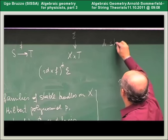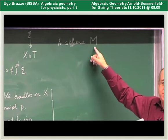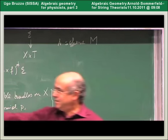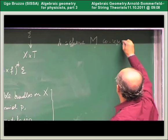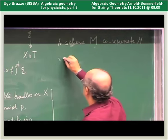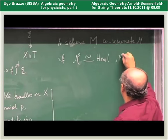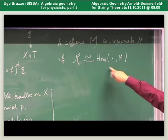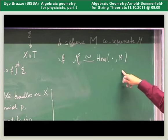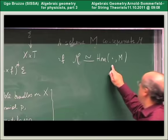We say that a scheme M coarsely represents the moduli functor if this functor is isomorphic to the functor of homomorphisms into M. This basically means that to know what families you have on S, you consider homomorphisms from S to M. The family is given exactly by the homomorphism from S to M.